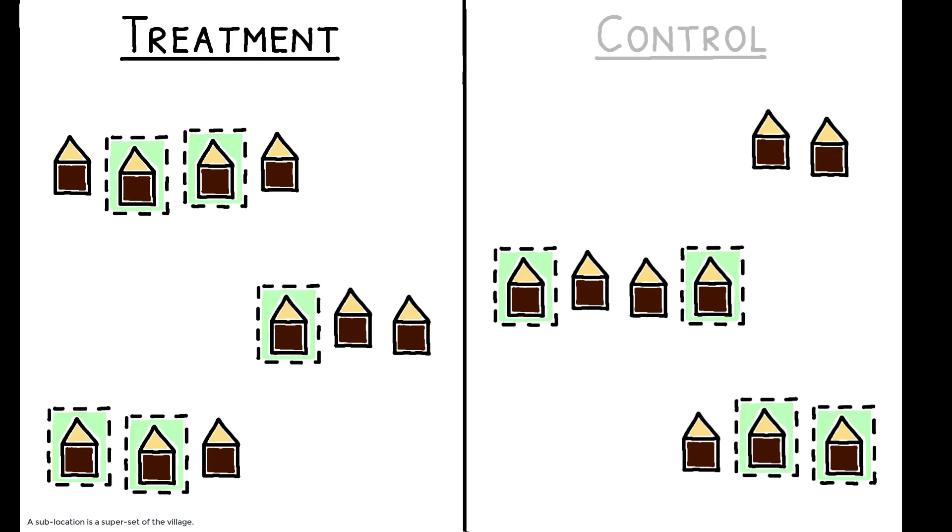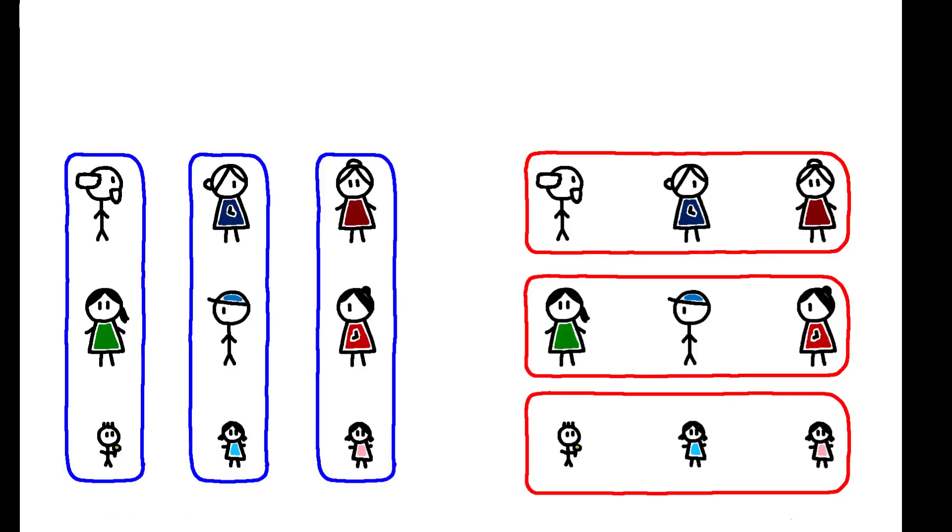Households who were eligible for the transfers were identified in both groups, but only those in the treatment actually received them. Crucially, the study's population includes members of kin and age-based societies, which allows the authors to compare how the transfer's spillover effects differ in both structures.